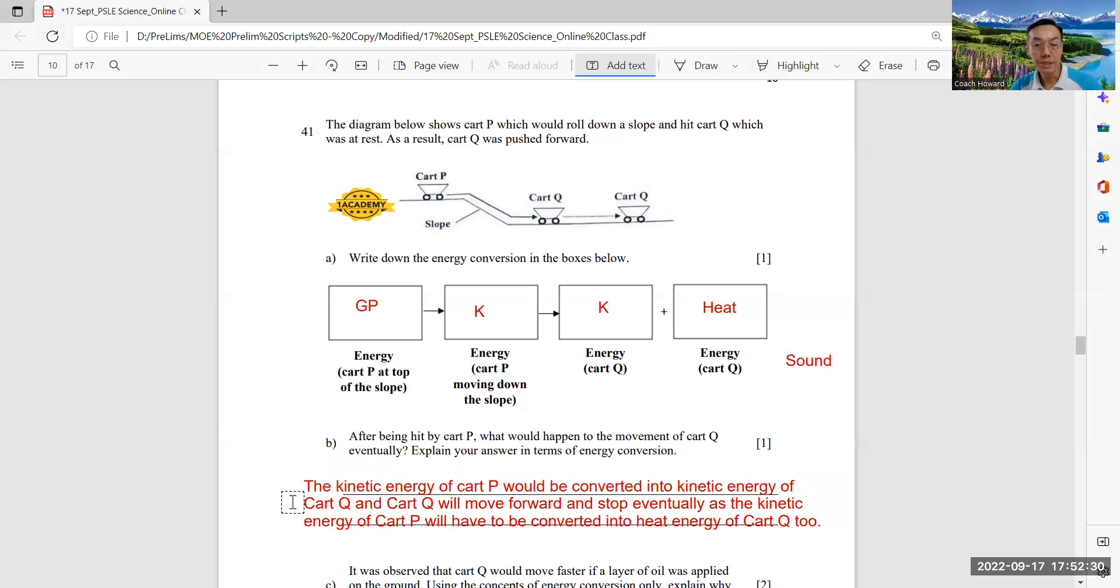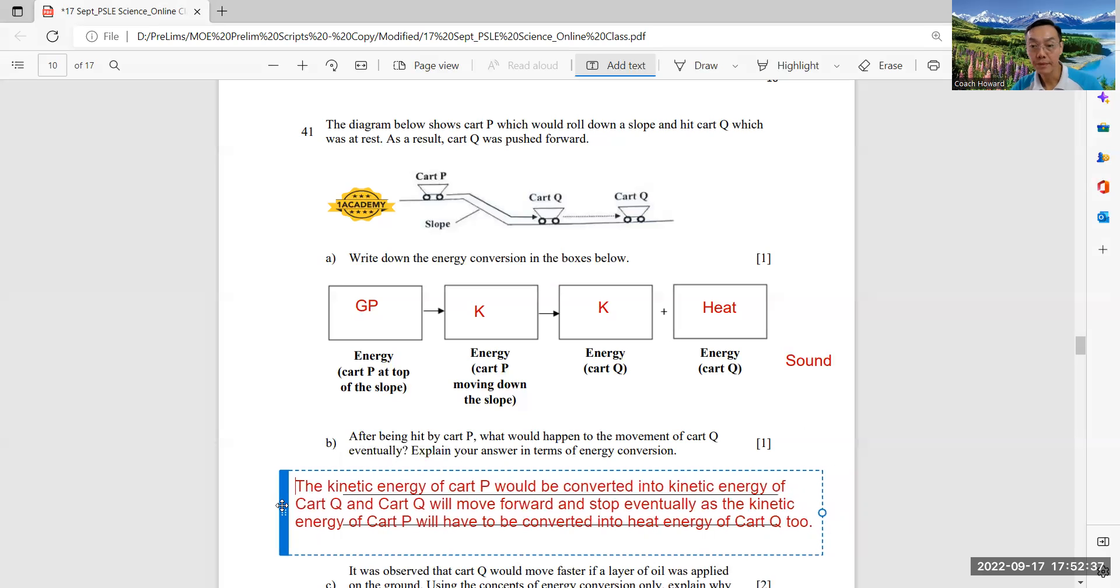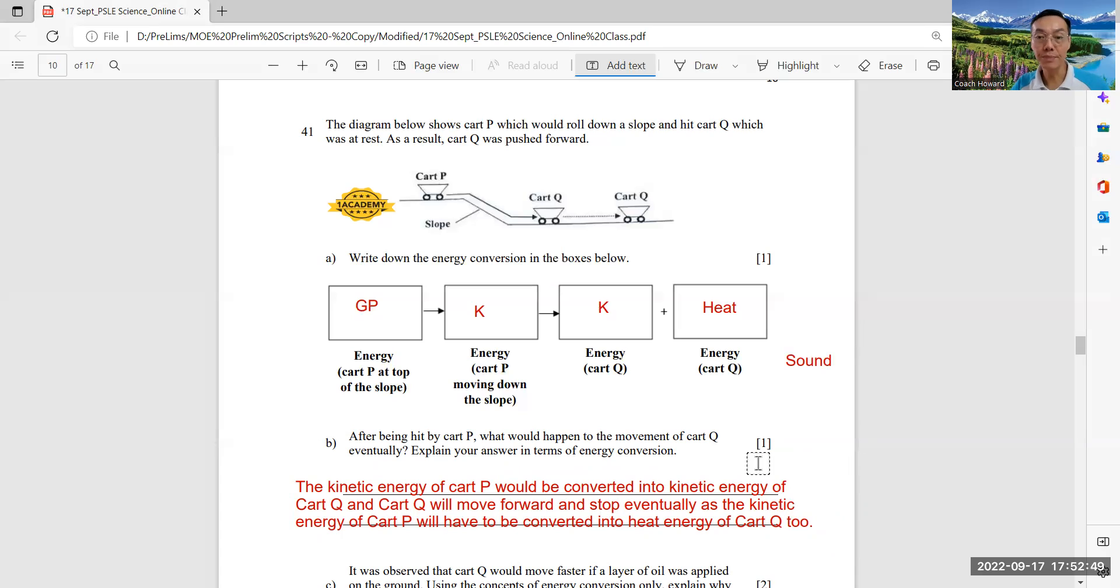I will read out the answer. So you say that kinetic energy of cart P will be converted into kinetic energy of cart Q, and cart Q will move forward and eventually stop as kinetic energy of cart Q will have to be converted into heat energy of cart Q. Okay, because they say what would happen to the movement of cart Q. Cart Q would move forward and eventually stop.